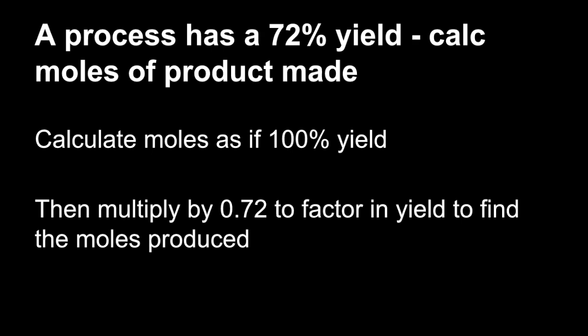Percentage yield now. So imagine a process has a 72% yield. Calculate the moles of product made. So the way I would do it, is calculate the moles as normal, as if it was a 100% yield, and then you need to multiply by the percentage yield, so 0.72 in this case, to factor in the yield to get those moles made. Obviously you're going to make fewer moles than the 100% yield suggests.